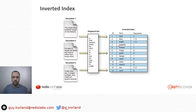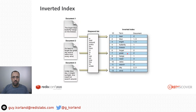I can easily answer simple queries — for example, find all documents that have the word 'butterfly'. I can easily see in the table that document number one has it. And I can run more complex queries, like find all documents that have the word 'great' and 'forget'. I can easily see that document number two has them both.